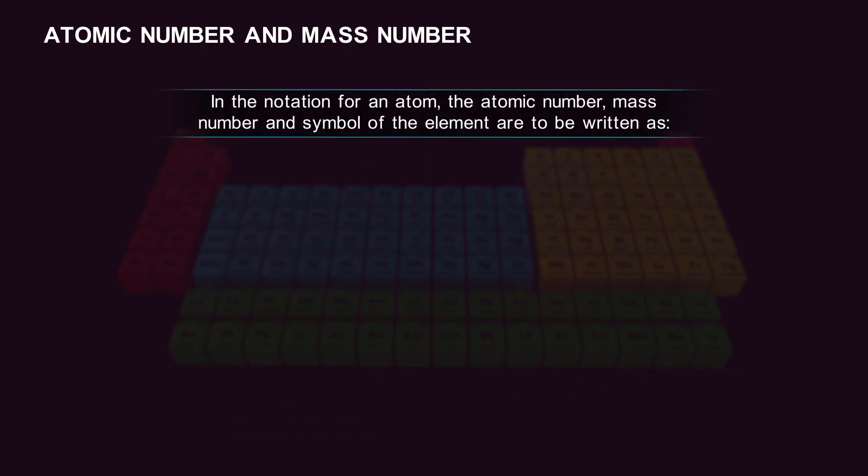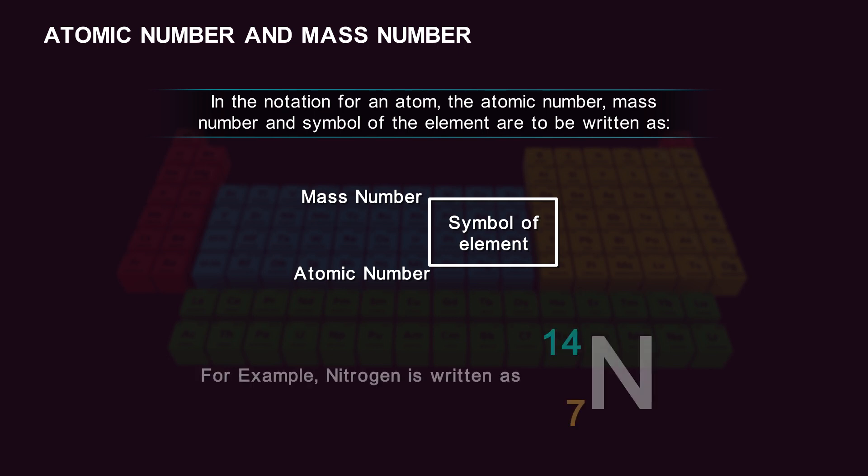In the notation for an atom, the atomic number, mass number, and symbol of the element are written as: mass number, symbol of element, atomic number. For example, nitrogen is written as 14 over 7 N.